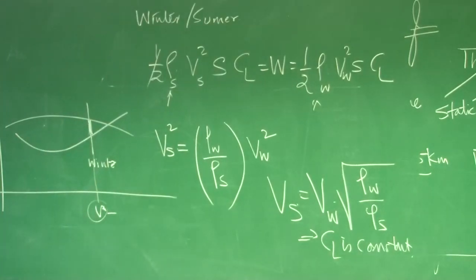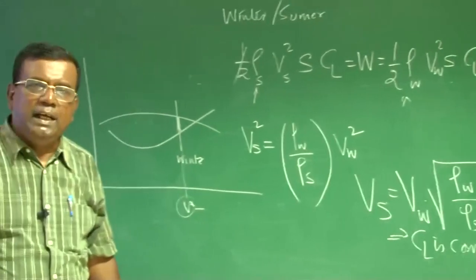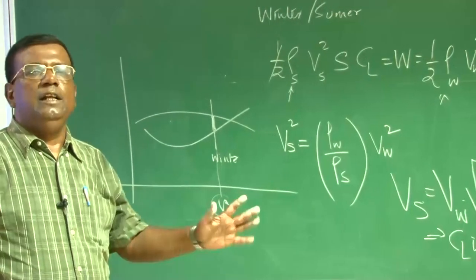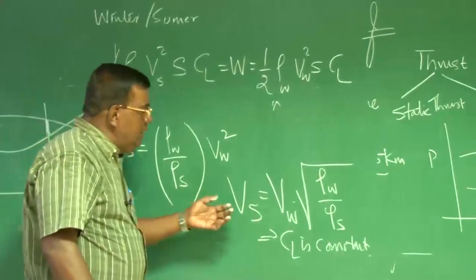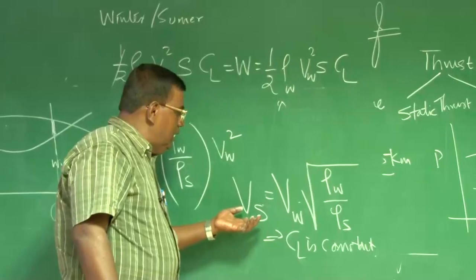Why CL constant? What is the meaning of that? Suppose I want to fly at drag minimum. For that CL is square root of CD naught by K. So that CL is fixed. Right?